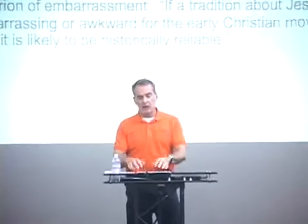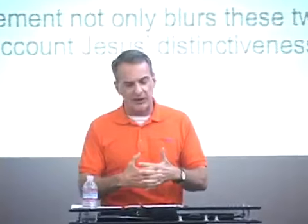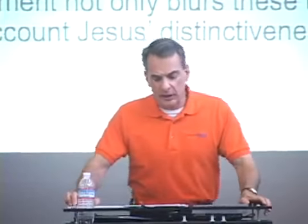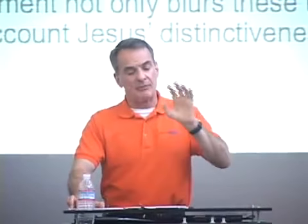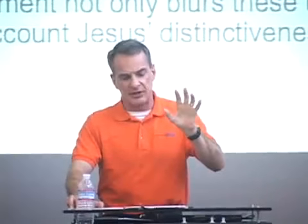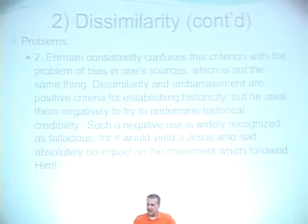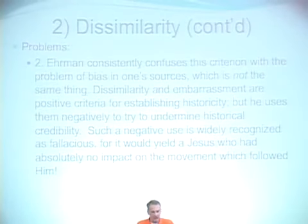Ehrman's statement not only blurs these two criteria together, but notice that it leaves wholly out of account Jesus' distinctiveness from Judaism. He fails to mention that if something is dissimilar from antecedent Judaism, that increases its historical probability. That's the first problem — it conflates and distorts these two separate criteria. Here's the second problem: Ehrman consistently confuses this criterion with the problem of bias in one's sources, and that's just not the same thing.